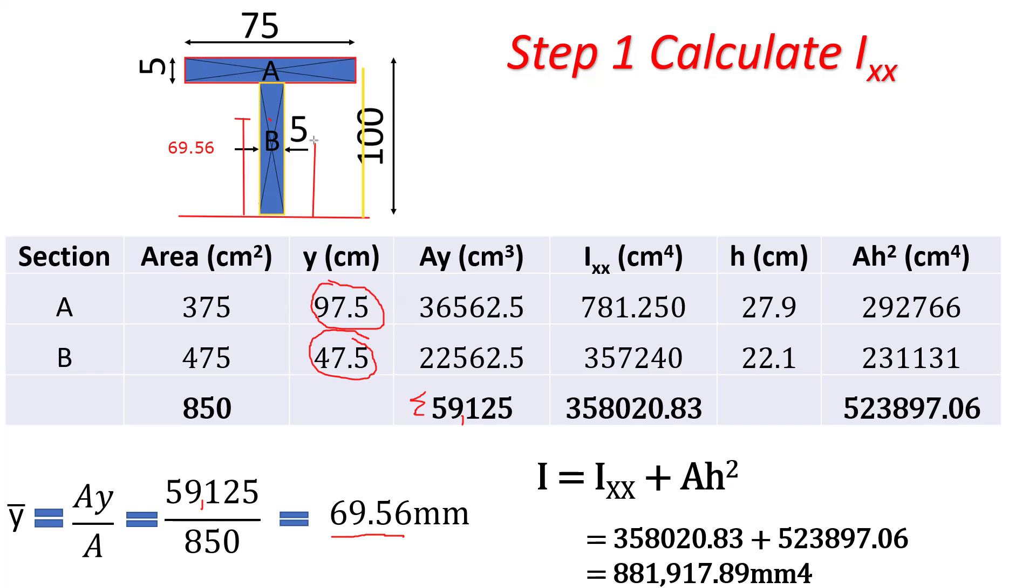So now we are going to calculate the individual Ixx. Remember, the formula according to parallel axis theorem is I equals Ixx plus Ah squared. So to get Ixx for the first figure here, it's basically bd cubed all over 12. So our b is the breadth, which is 75, our d is 5. So if you work out, you'll get 781.25.